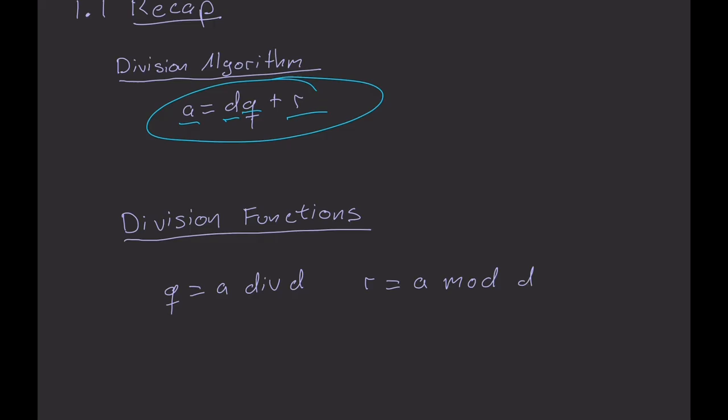In a way, it is a way of writing that d divides a, given that there could be a remainder. So, not saying that d necessarily divides a evenly. If it was, of course, r would equal zero, but that doesn't have to be the case.